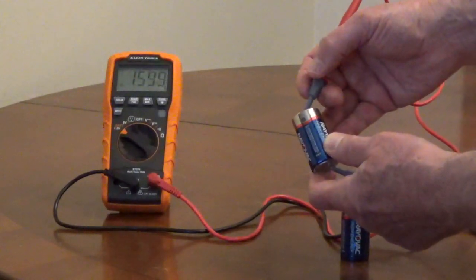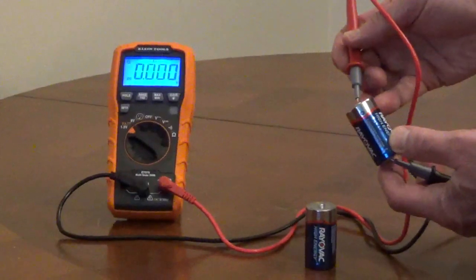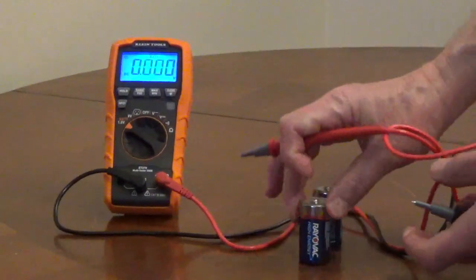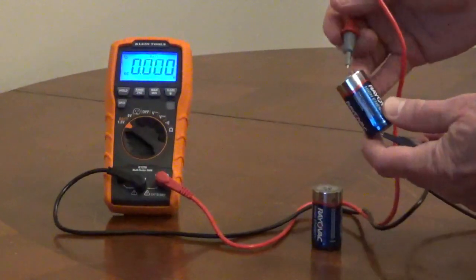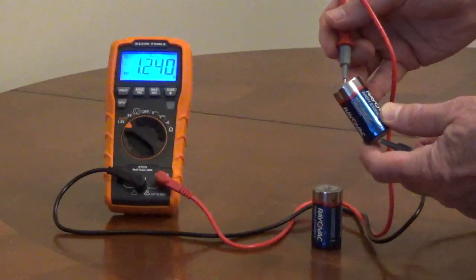If the battery is good, it will be close to 1.5 or 9. For a 1.5 volt battery, the voltage is too low if it's 1.2 volts or below. For a 9 volt battery, the voltage is too low if it's 7.2 volts or below.